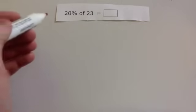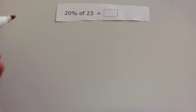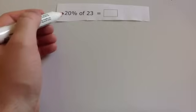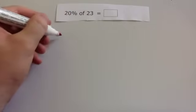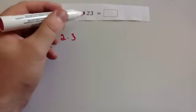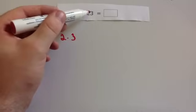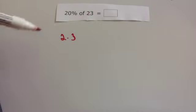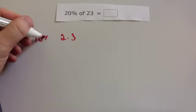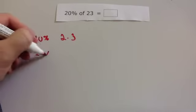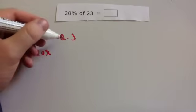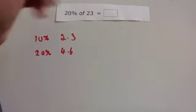We're now going to look at 20% of 23. This one, I'm going to get 10%, and then double it. 10% of 23 is 2.3, because remember you divide it by 10. So 23 divided by 10 is 2.3. That's 10%. So 20% will be double 10%. Double that is 4.6. So 20% of 23 is 4.6.